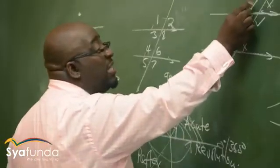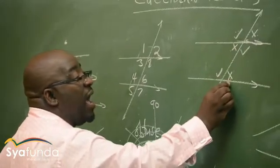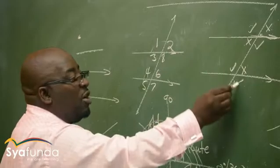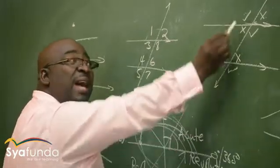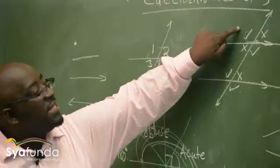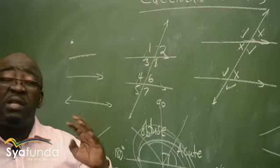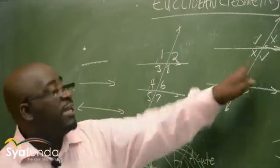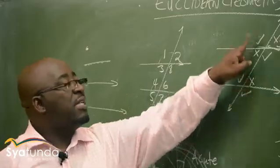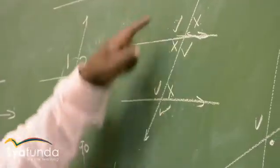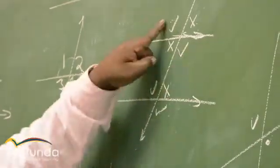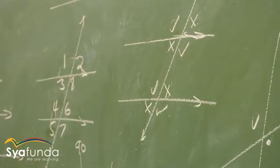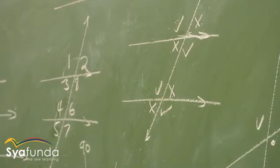Moving on, angles on opposite sides of the transversal but outside the parallel lines are called exterior alternate angles, and they are also equal when the lines are parallel. For alternate angles, one must be on one side of the transversal and the other on the other side. Interior alternate angles are inside the parallel lines; exterior alternate angles are outside.